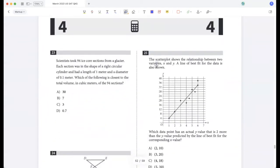Scientists took 94 ice core sections from a glacier. Each section was in the shape of a right circular cylinder and had a length of one meter and a diameter of 0.1. Which of the following is closest to the total volume of the 94 sections? Volume of one section will be pi r squared h, so that's radius is 0.5, so 0.5 squared times one, so that is 0.25 pi. The total volume will be 94 times 0.25 pi. Can we just do it without a calculator? 94 by 4, so that would be 4 into 2 is 8.